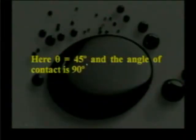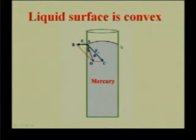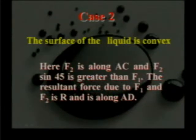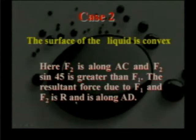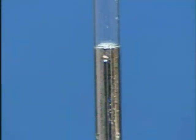In the second case, where the angle of contact is 90 degrees, the liquid surface is convex — this is the case of mercury. Here F1 acts along AB and F2 (the force of adhesion) acts along AC, with the resultant force along AD. Since F2 sin 45 is greater than F1, the resultant R acts along AD and the angle of contact is more than 90 degrees. For mercury in a glass tube, the upper surface will be convex — the meniscus is convex.